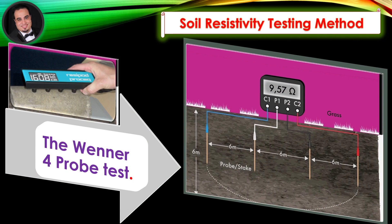One of the common soil resistivity testing methods is the Wenner four-probe test, as shown in the figure. The illustration shows how the probe spacings relate to the apparent depth under test. For example, a 6m probe spacing indicates the soil resistivity at a depth of 6m.